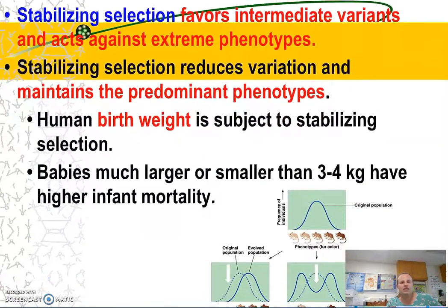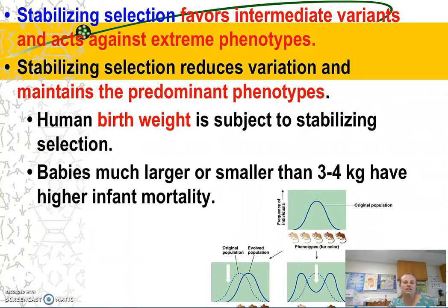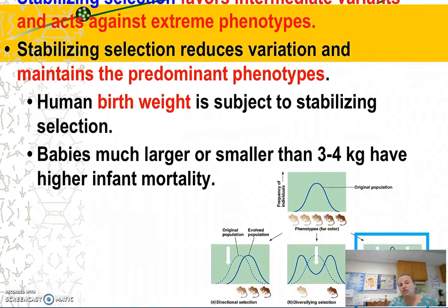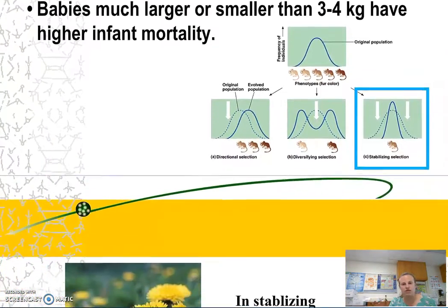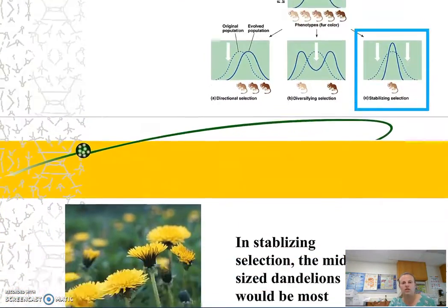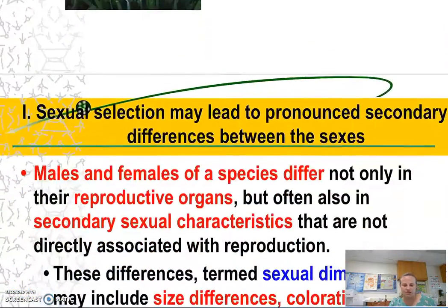Stabilizing selection maintains the predominant phenotypes. A common example is human birth weight. If a baby is larger or smaller than 3 to 4 kilograms, there is often a higher infant mortality rate associated with that size.